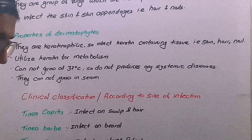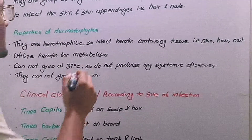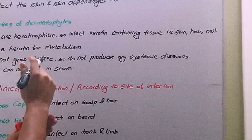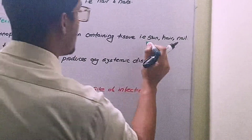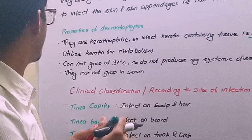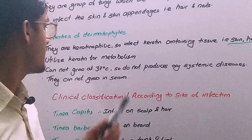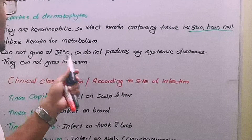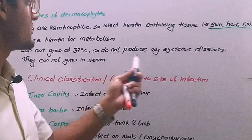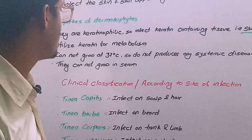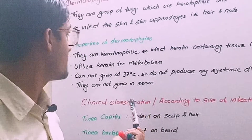Dermatophytes have properties like being keratinophilic — that is, they infect the keratin layer present in hair, skin and nails. They utilize keratin for metabolism and they cannot grow at 37 degrees Celsius. So in laboratory diagnosis, during isolation and identification, we culture at 25 to 30 degrees Celsius. Because they cannot grow at 37 degrees Celsius, they do not produce any systemic disease, and they cannot grow in serum also.